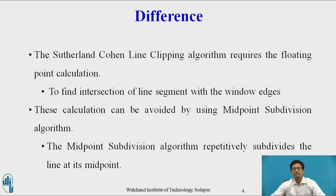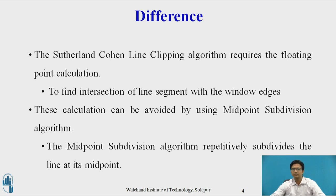The difference between Sutherland-Cohen Line Clipping Algorithm and Midpoint Subdivision Algorithm is that the Sutherland-Cohen Line Clipping Algorithm requires floating point calculation in order to find the intersection of a line segment with the window edges. This calculation can be avoided by using Midpoint Subdivision Algorithm, as this algorithm repeatedly subdivides the line segment at its midpoint.